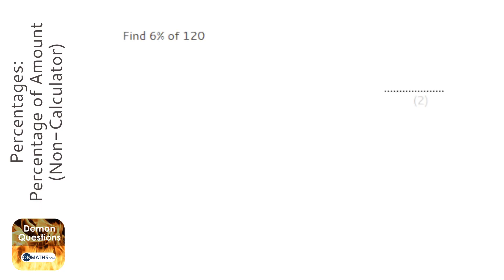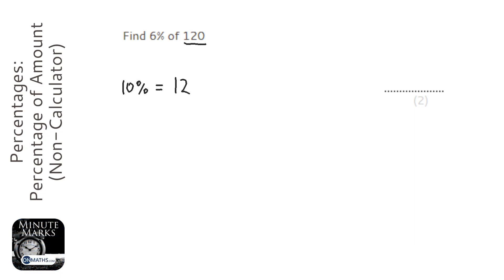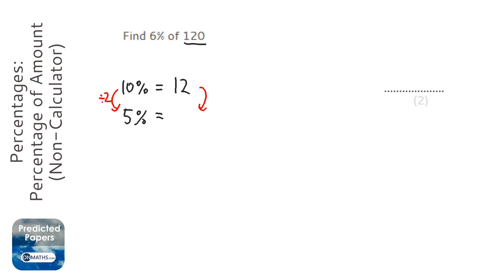We're asked to find 6% of 120. I'm going to start off by finding 10%, and to do that I'm just going to divide 120 by 10, which will give me 12. I'm then going to work out 5%, and to do that I'm just going to halve the 10%, and that will be 6.